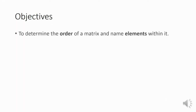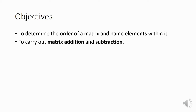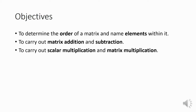Some quick unit objectives. This unit is a very quick introduction to matrices. This lesson we're going to be looking at the order of a matrix, or the dimension of a matrix, and the elements within them. We're going to be looking at how to add and subtract, and how to multiply in two different ways: by a scalar and by another matrix.